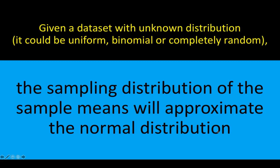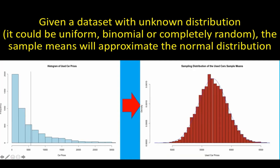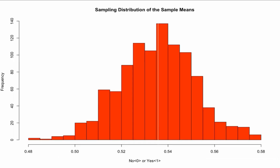The Central Limit Theorem says that if we take samples from those random distributions, the sampling distribution of the sample means will approximate the normal distribution.